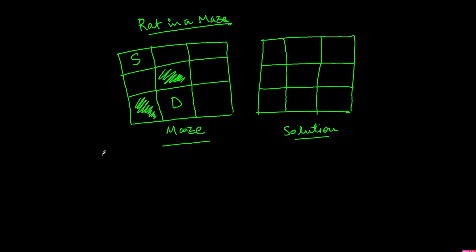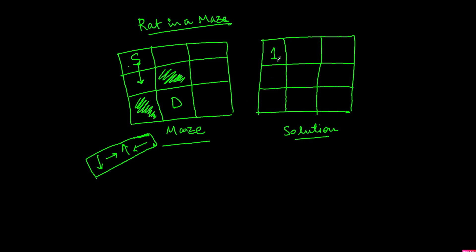In our sequence, each time the rat will try the downward direction first. If that doesn't work, go right; if that doesn't work, go up; if that doesn't work, go left. We are going to follow this sequence. The rat will start from the source, first going down. Every time the rat moves to a cell, we'll mark that cell as one.